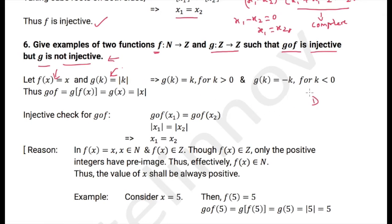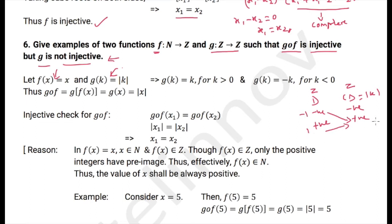The domain of g has all integers, both negative and positive, and the co-domain also contains all integers. For g(k) = |k|, a negative value and its positive counterpart both map to the same positive value — for example, g(-1) = 1 and g(1) = 1 — so g is not injective. We can split g(k) as: g(k) = k for k > 0, and g(k) = -k for k < 0. Thus g∘f = g(f(x)) = g(x) = |x|.